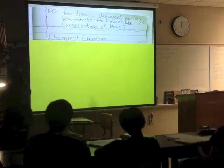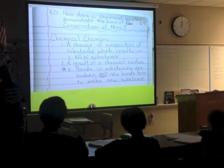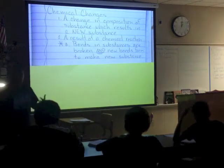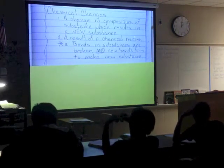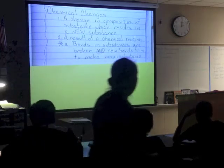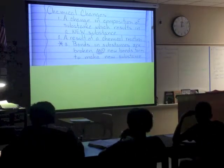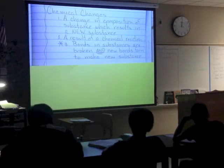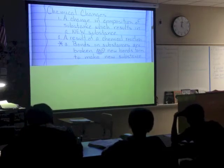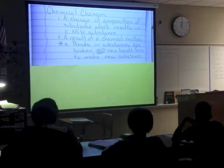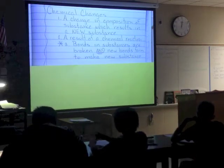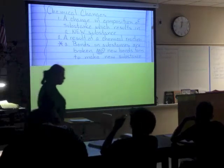A chemical change is basically a change in composition — what it is composed of, specifically at the molecular level, in the bonds. It is a result of a chemical reaction. In a chemical reaction, at the atomic level, the bonds are breaking. That's important — you need to know this. The bonds are breaking, and then they're making a whole new substance.